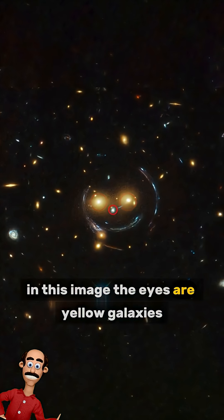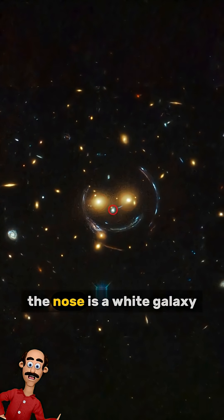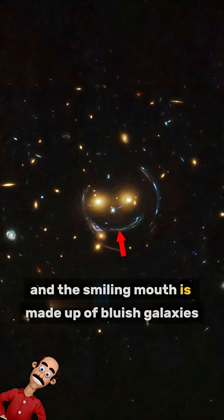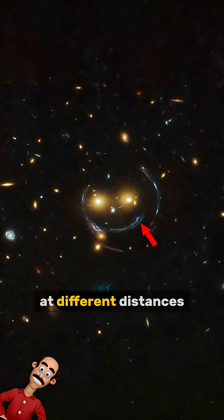In this image, the eyes are yellow galaxies, the nose is a white galaxy, and the smiling mouth is made up of bluish galaxies at different distances.